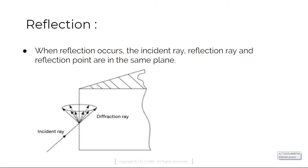Next we have reflection. When reflection occurs, the incident ray, reflection ray, and reflection point are in the same plane. The angle between the incident ray and the reflection point is equal to the angle between the reflected ray and the normal line.